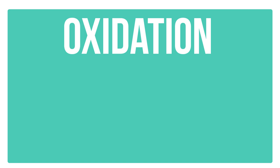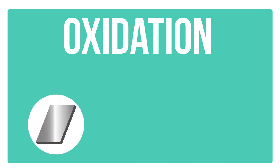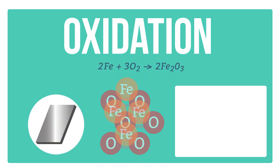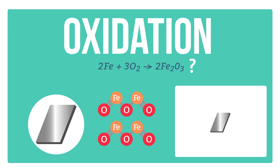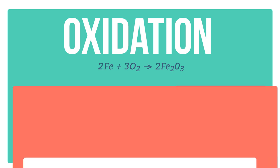Oxygen also combines with metals. When oxygen reacts with iron, the iron is readily oxidized. Do you know the common name for Fe2O3? Try thinking about what happens to iron metal after it is exposed to air for a long time. Fe2O3 is rust.